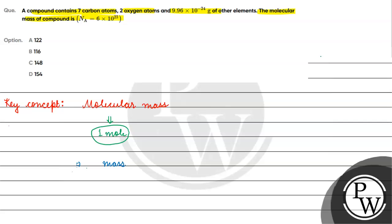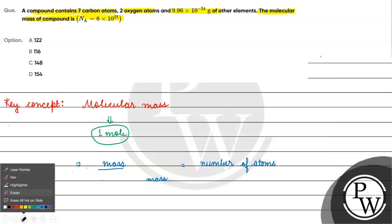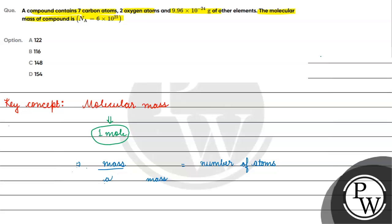The mass of 1 mole of a compound is equal to the number of elementary entities — number of atoms, or number of ions, or number of molecules — multiplied by atomic mass, divided by Avogadro's number.